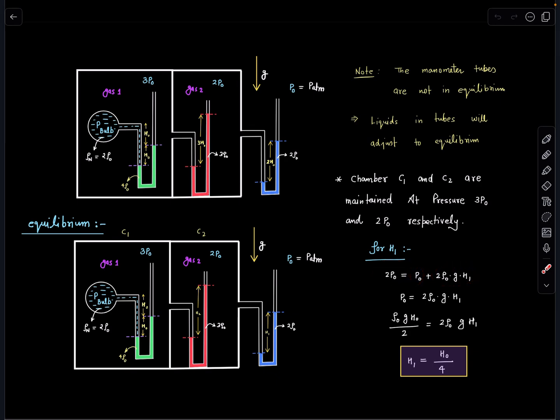And when I substitute the value of p naught as rho g h naught by 2 and simplify, h1 equals h naught by 4 I am going to get and this is the new height difference which will occur in this blue liquid.